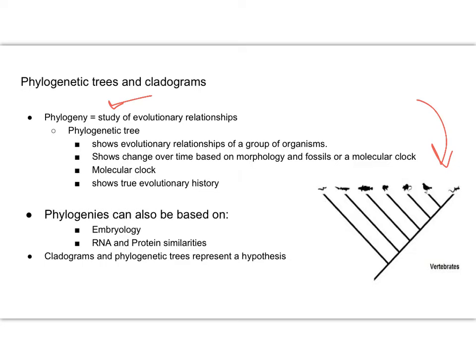Those passages of time are going to be based off of morphology, fossils, or what we call the molecular clock. The molecular clock is going to be the average rate at which the species genome accumulates mutations, because remember, that will facilitate change or facilitate evolution.